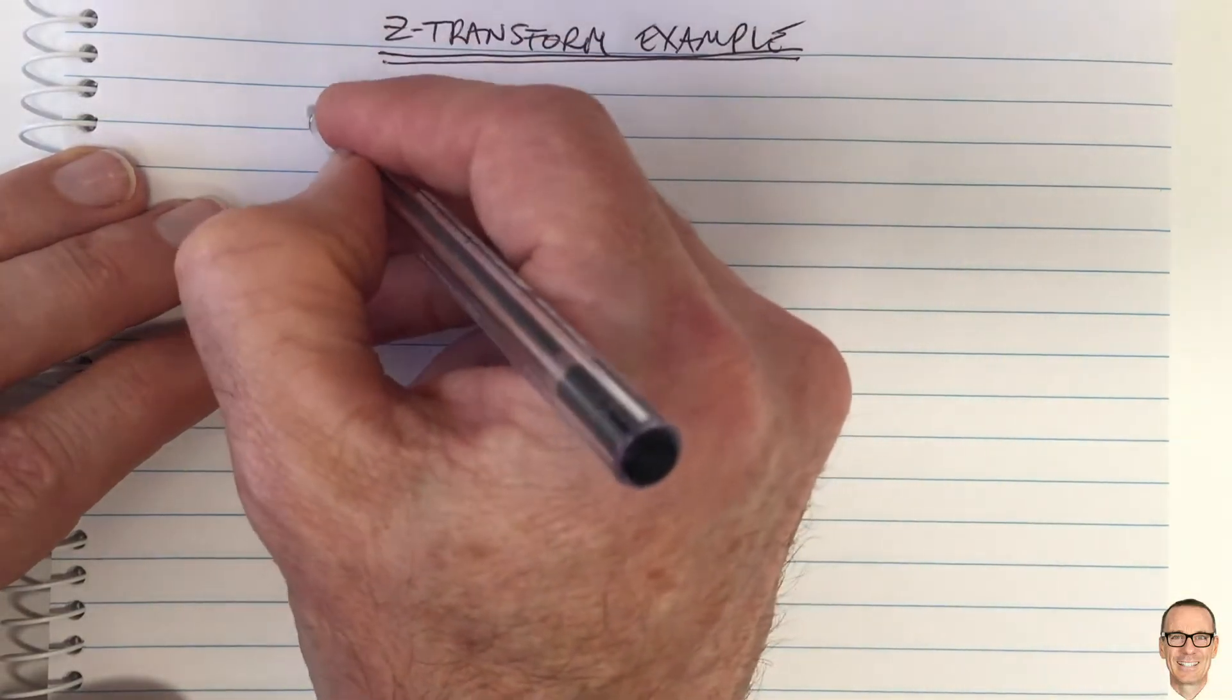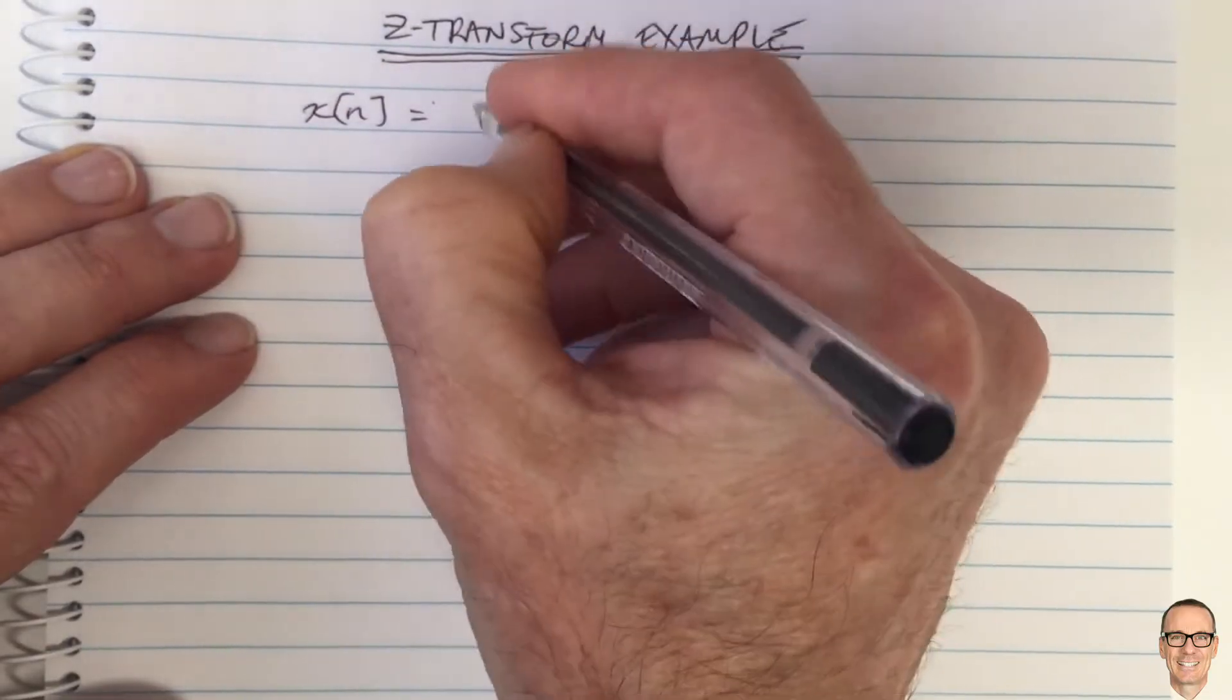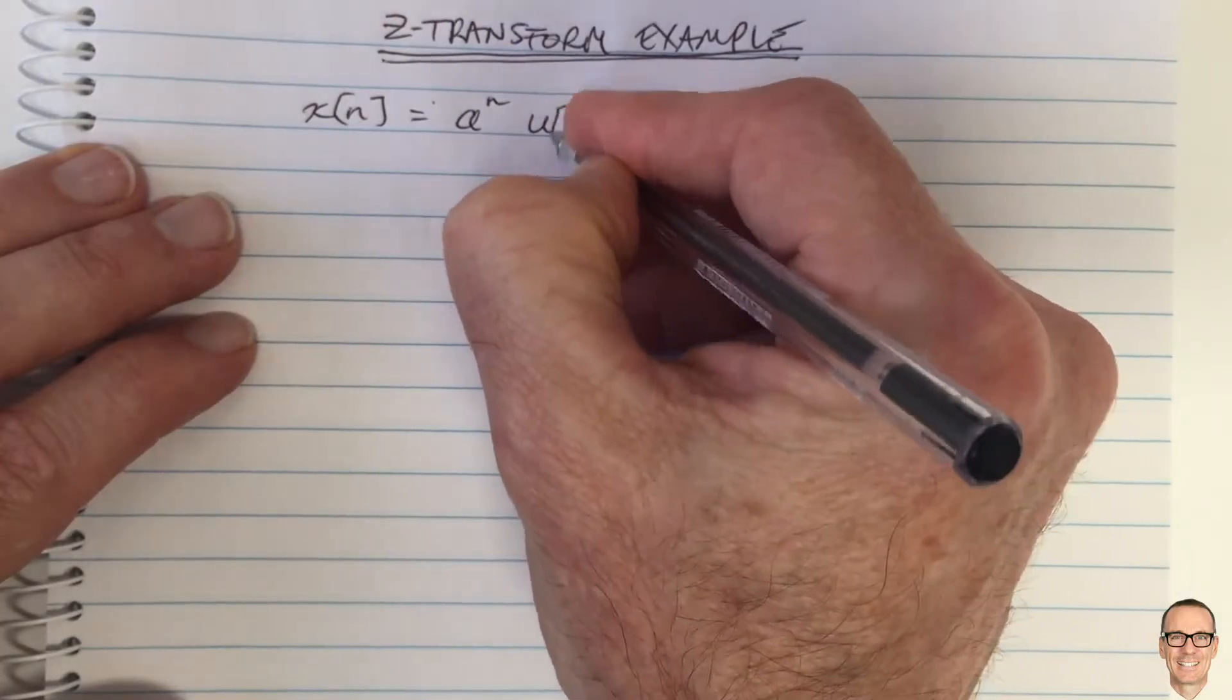Let's look at the example of taking the Z-transform of a signal, which is a to the n times the unit step, un.